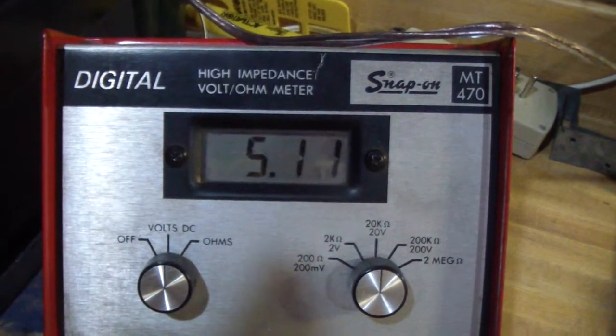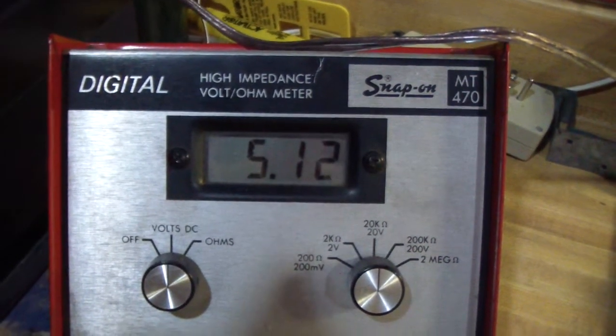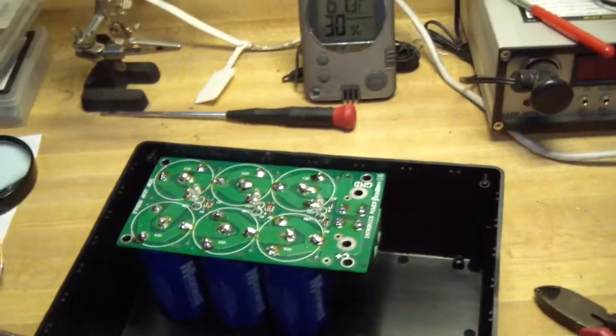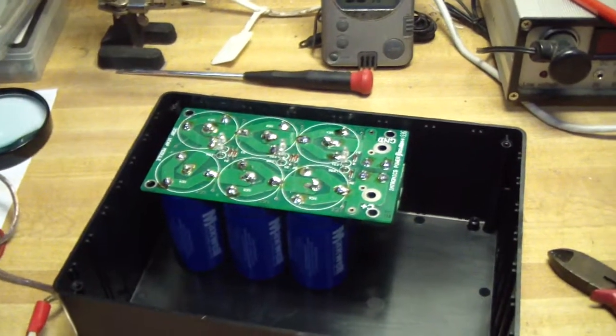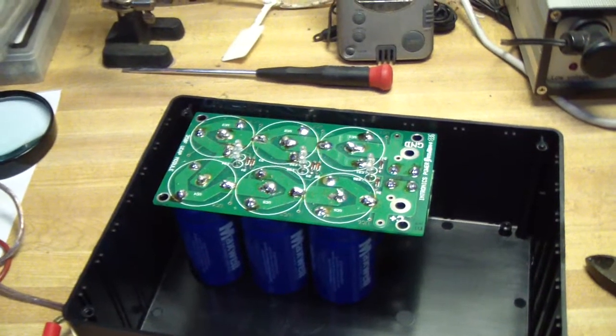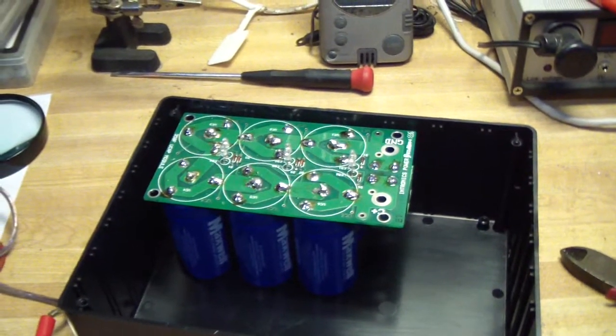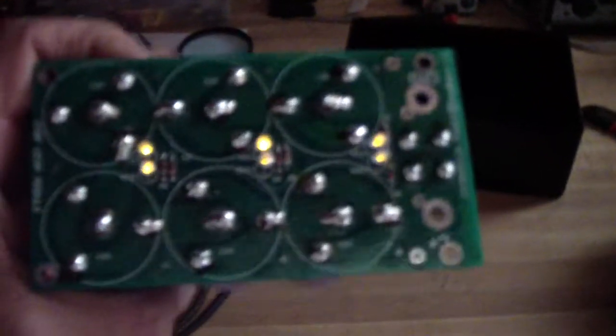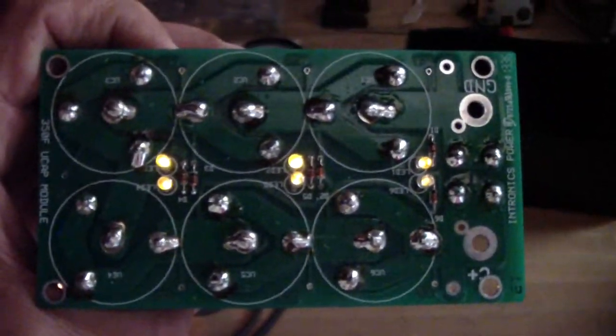We're at 5.12 volts. This one is charged up. Let me turn the lights off so you may be able to see the glow of the LEDs. You can see that the LEDs are glowing. This one is fully charged and I'm waiting for the other one to charge up.